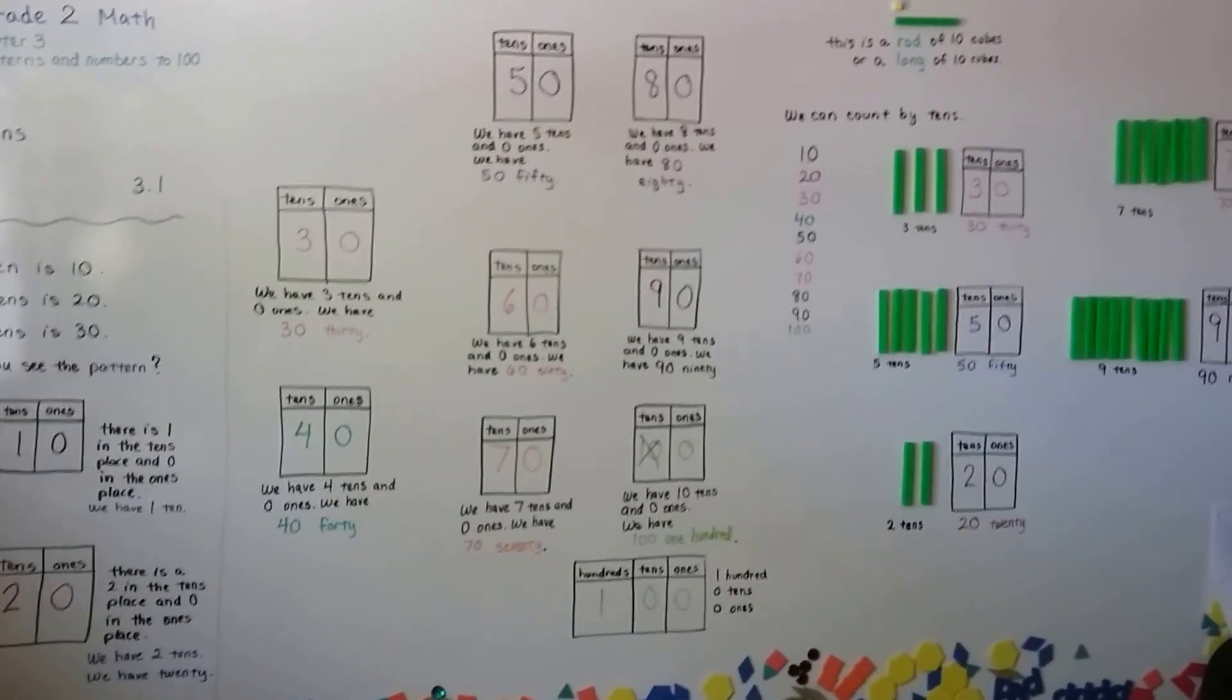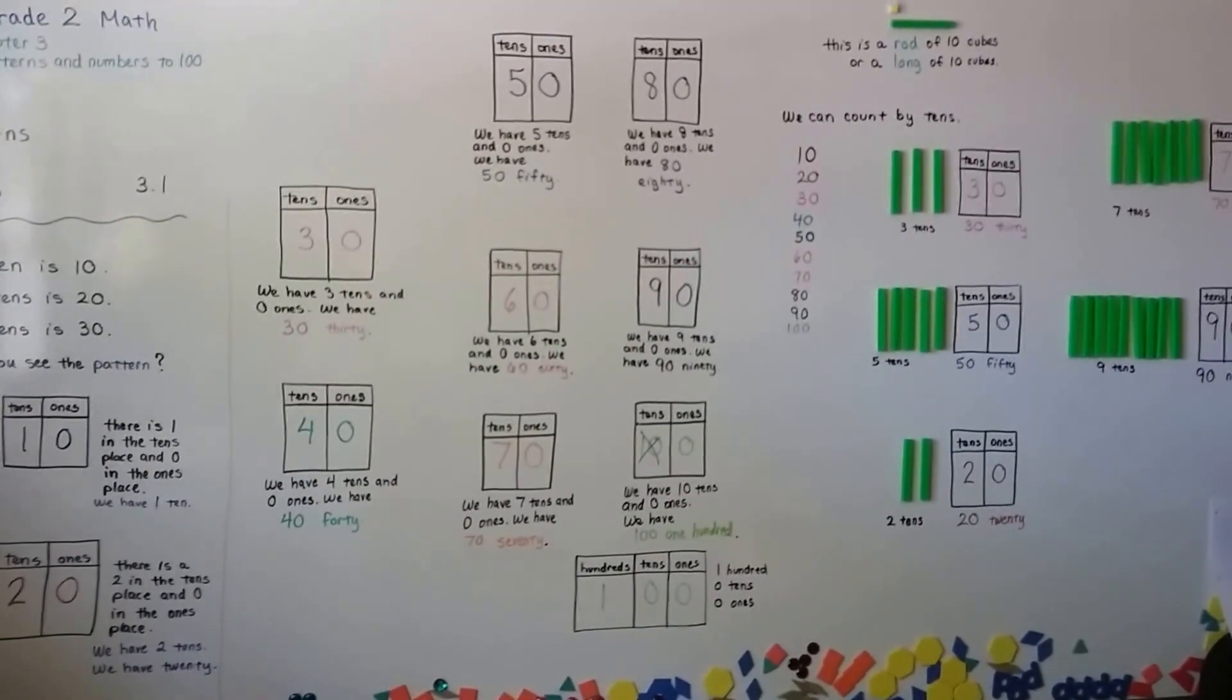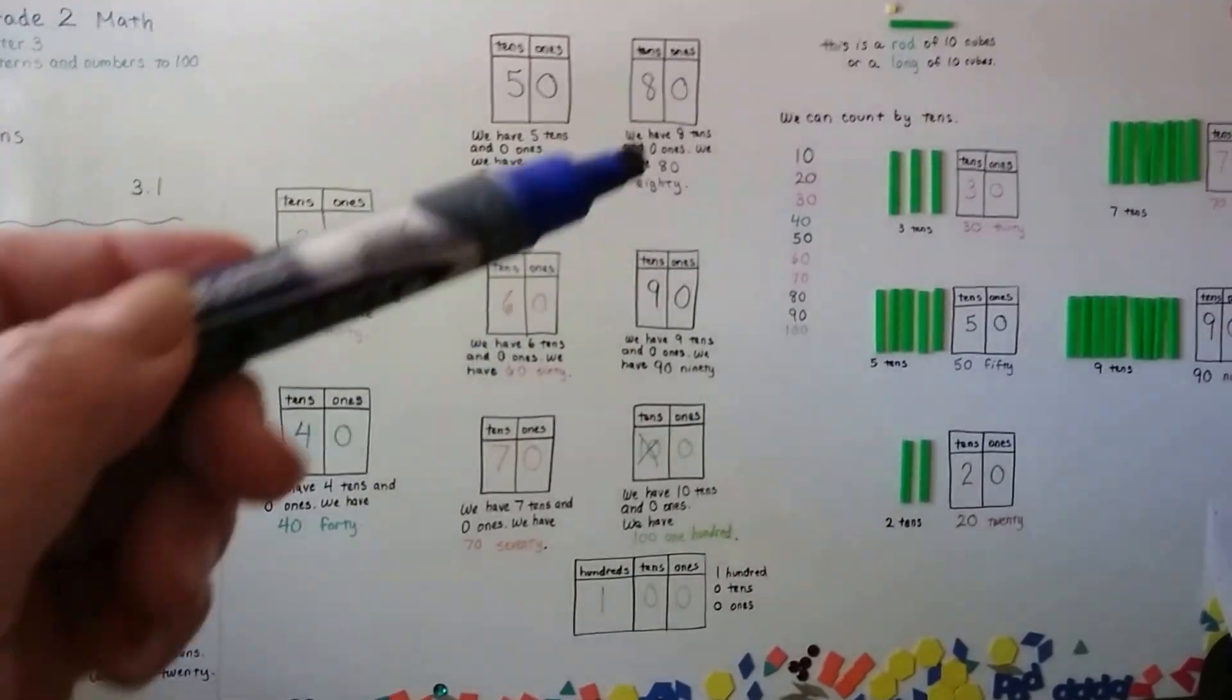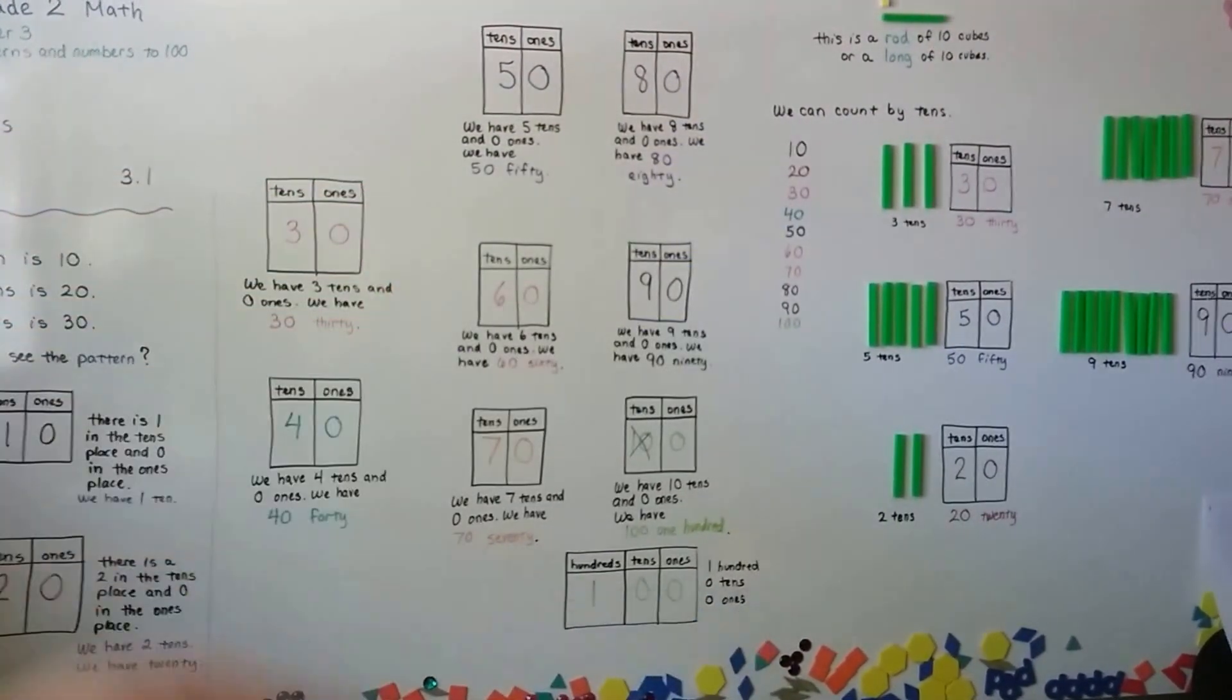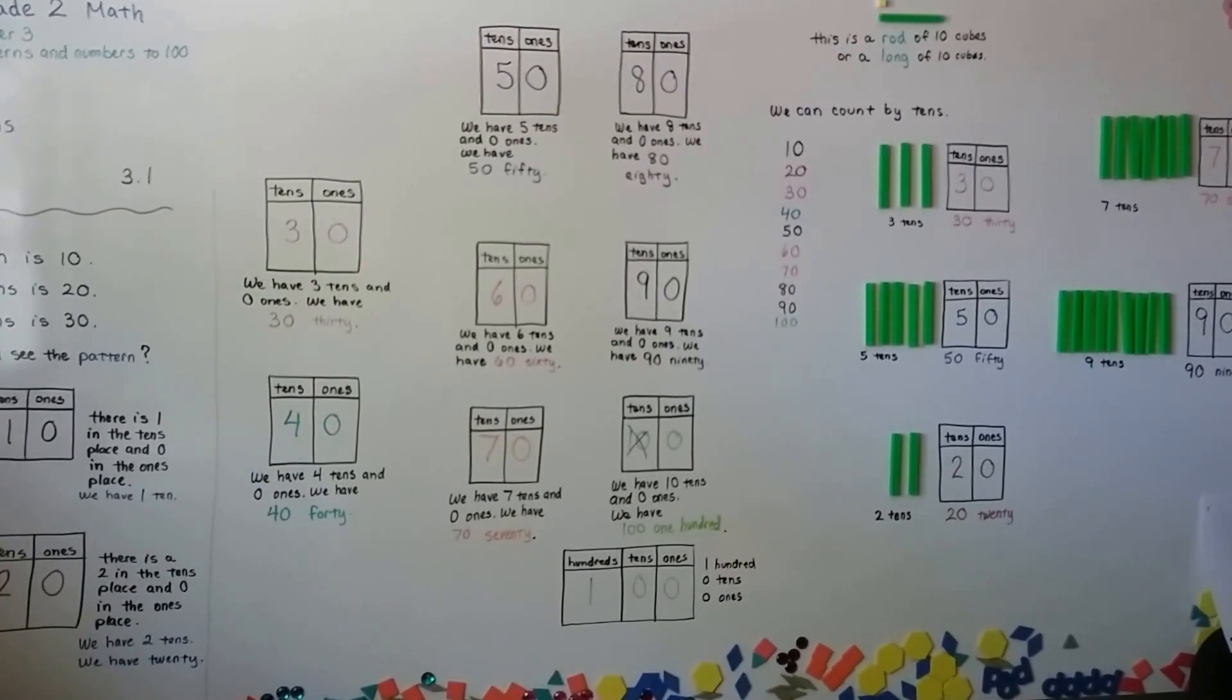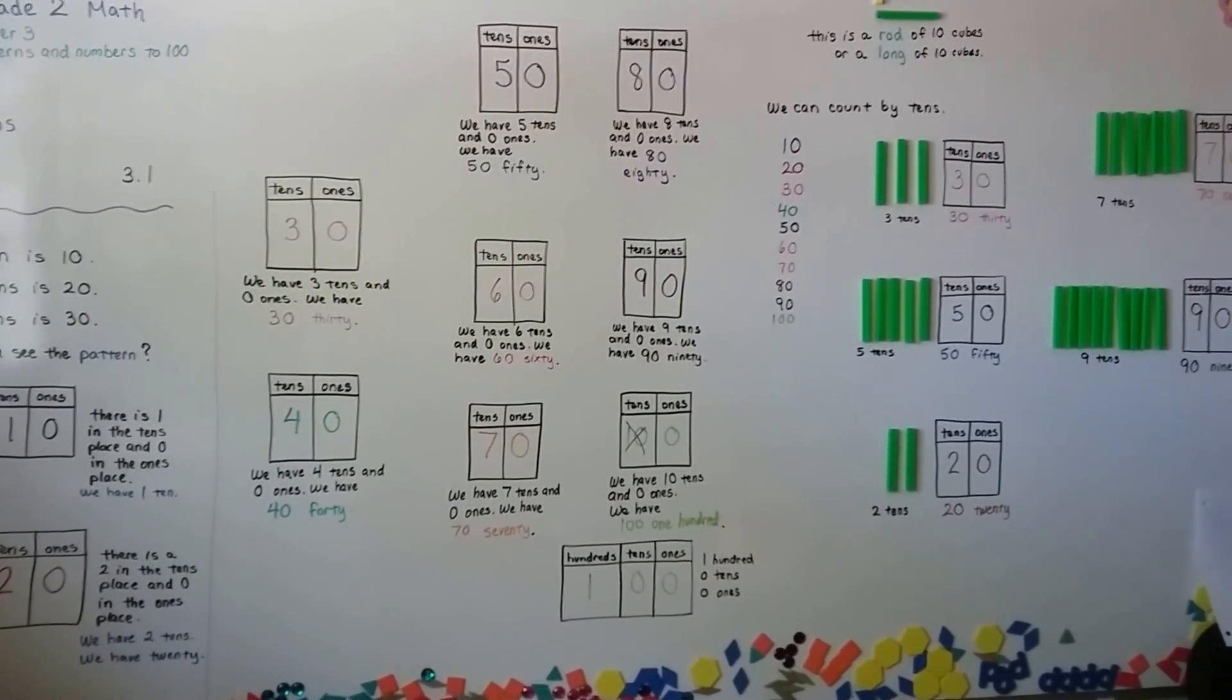So that's how we count with 10, and those are the patterns of 10, that all the ones places are zeros and the tens places count up. I'll see you next video. Bye!